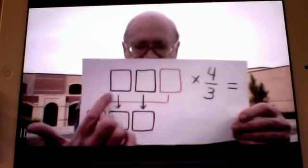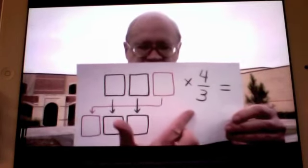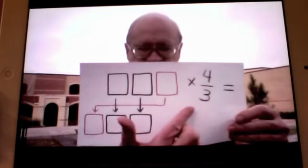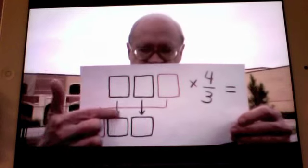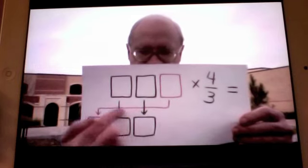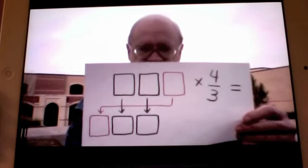Can you find a counting number of three digits such that if you multiply it by four-thirds, you get an answer where these two digits are the same, but the digit on the end is transferred to the front.